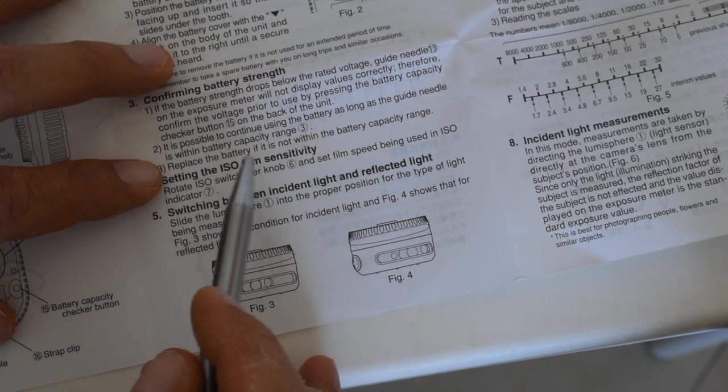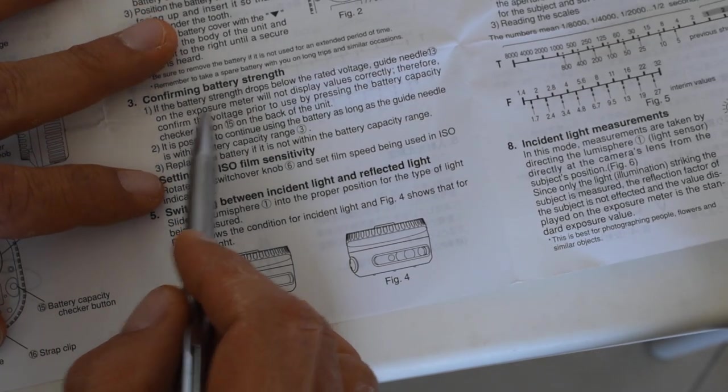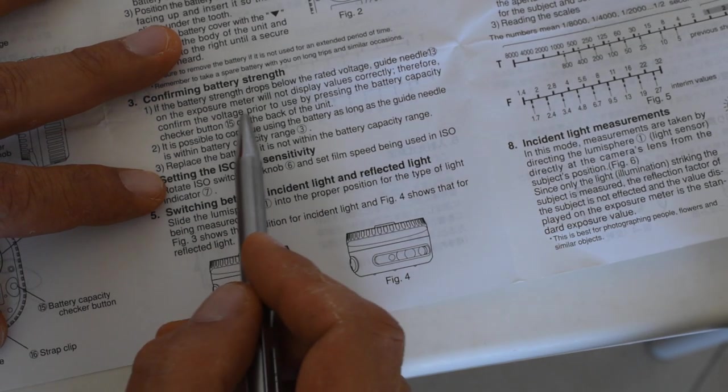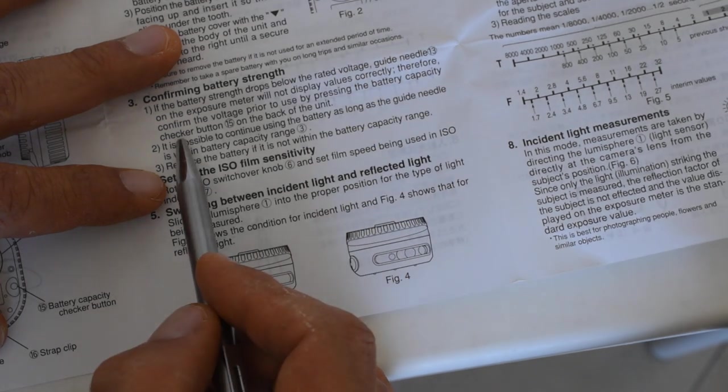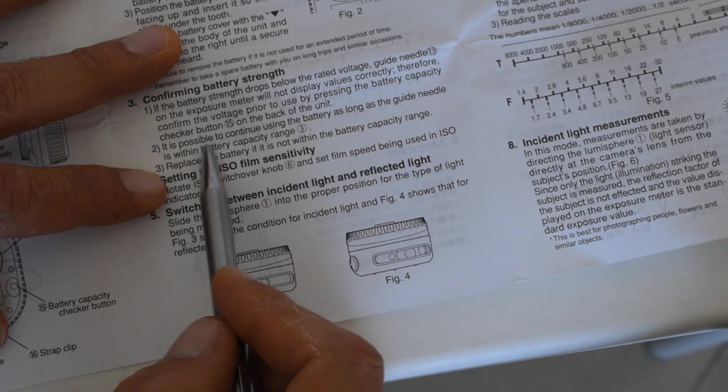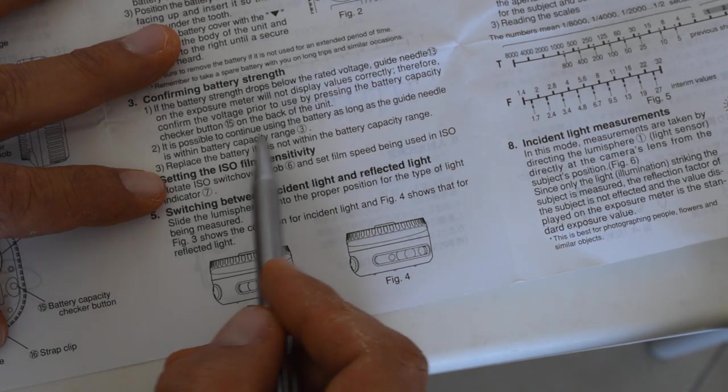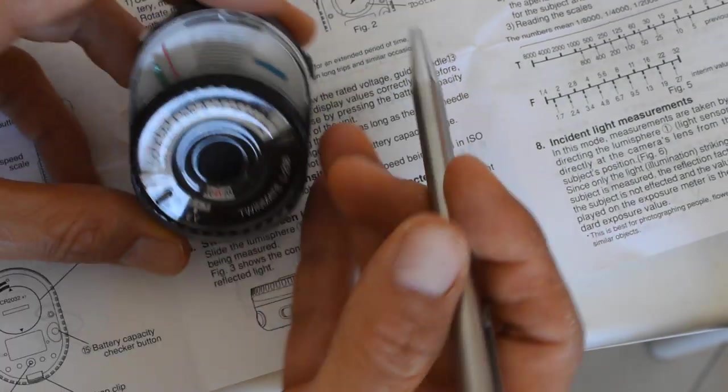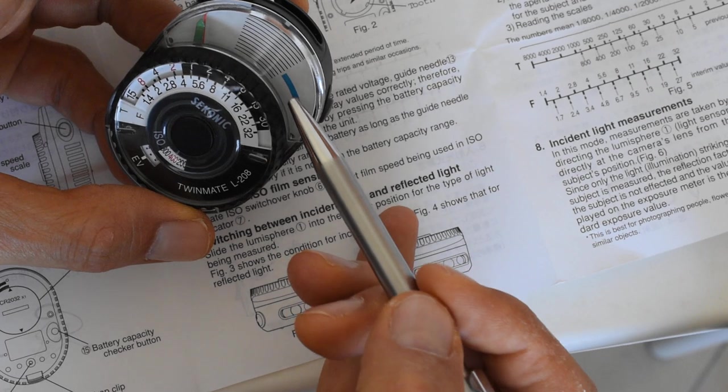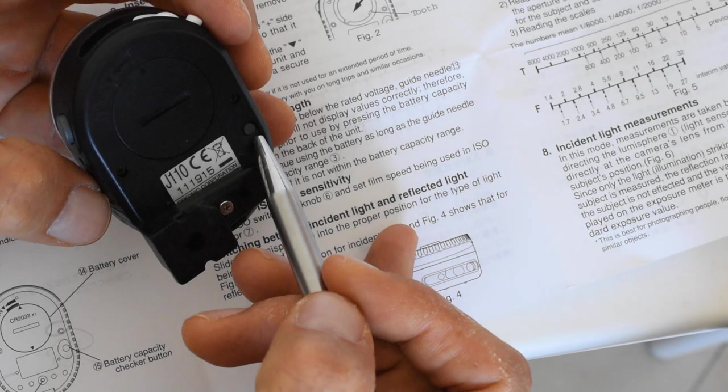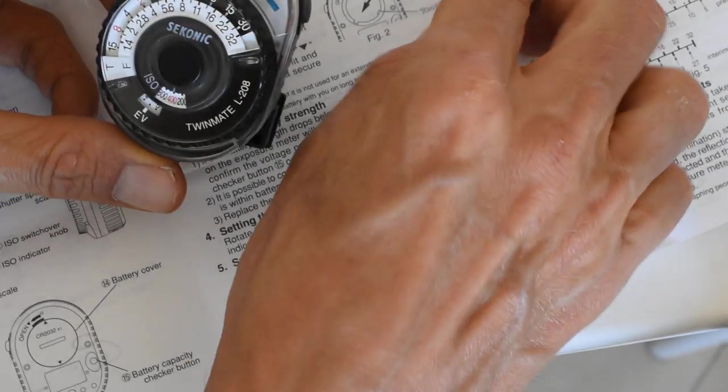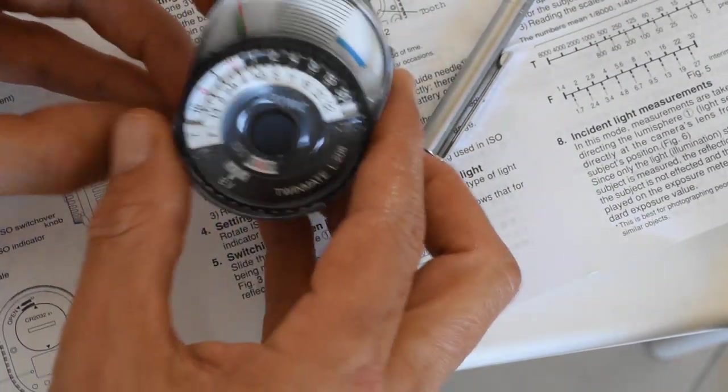Confirming battery strength. If the battery strength drops below the rated voltage, the guide needle on the exposure needle will not display values correctly. Therefore, confirm the voltage prior to use by pressing the battery capacity checker button on the back of the unit. It is possible to continue using the battery as long as the guide needle is within the battery capacity range. So the battery capacity range is reflected by that blue stripe right there. So if I push the battery check button here and the needle responds and goes into the range indicated by this blue stripe, then we're in good shape. So let's check that out. Here's the check button on the back.